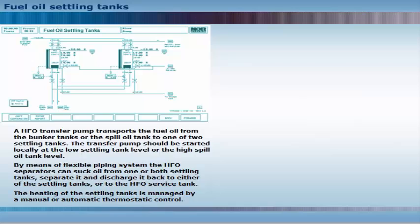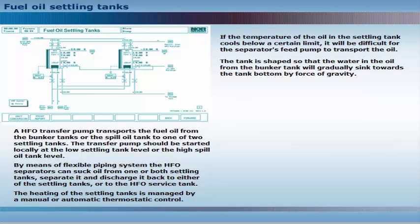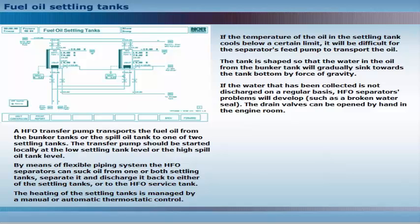The heating of the settling tanks is managed by manual or automatic thermostatic control. If the temperature of the oil in the settling tank cools below a certain limit, it will be difficult for the separator's feed pump to transport the oil. The tank is shaped so that water in the oil from the bunker tank will gradually sink towards the tank bottom by force of gravity. If the water that has been collected is not discharged on a regular basis, heavy fuel oil separator problems will develop, such as a broken water seal.